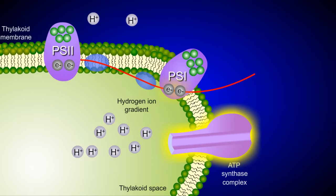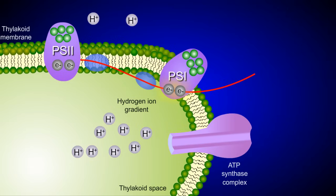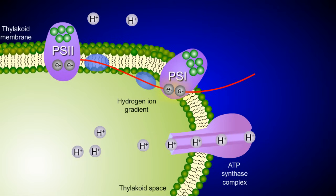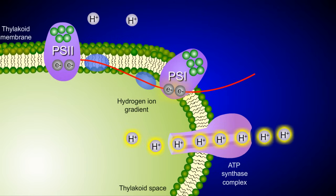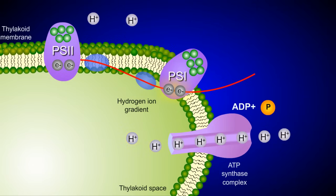This gradient contains a large amount of potential energy, which is used by an enzyme called ATP synthase. The hydrogen ions flow down the concentration gradient through a channel in ATP synthase, releasing energy in the process. ATP synthase uses this energy to add a phosphate to ADP, forming ATP.